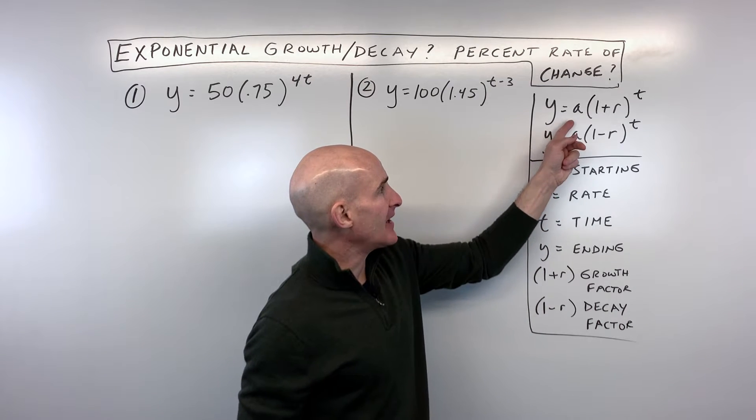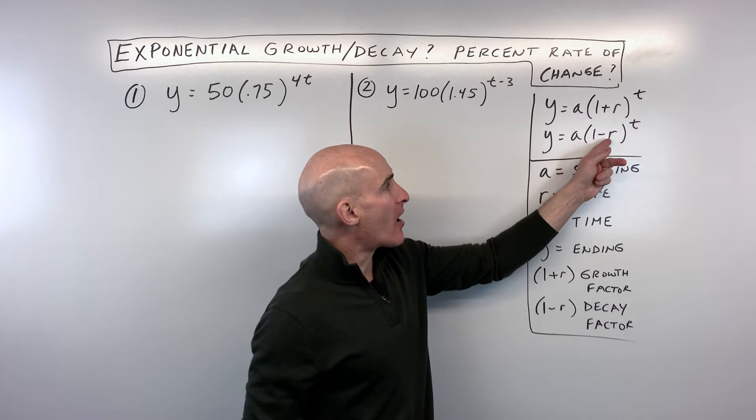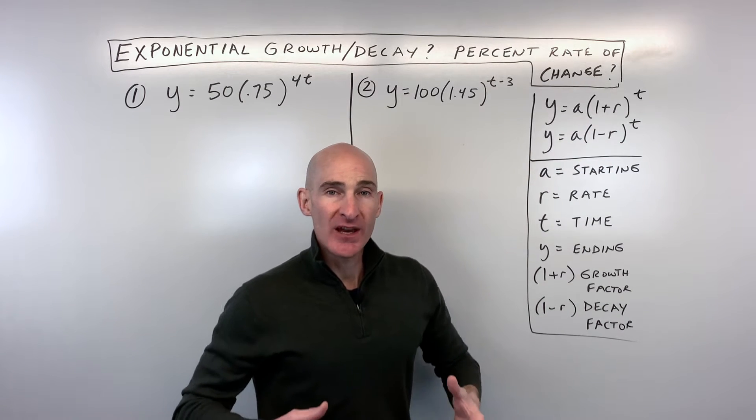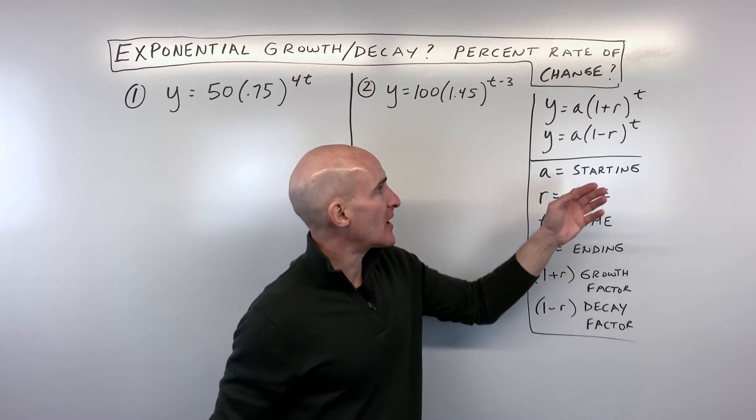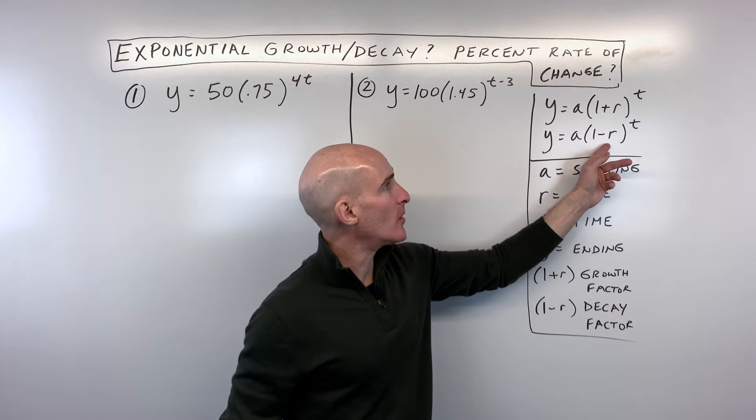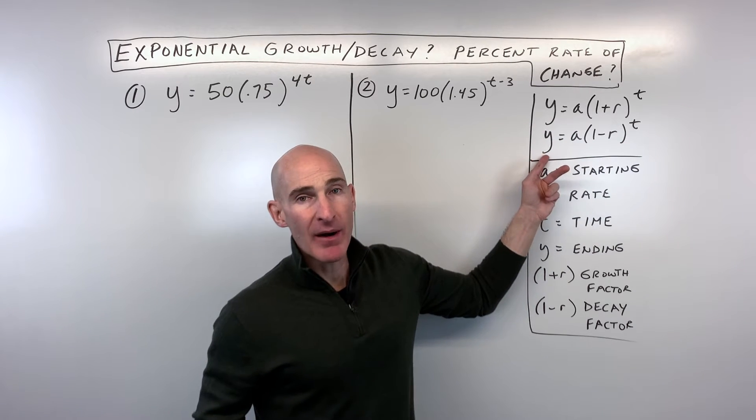And just remember that a here represents the initial amount or the starting amount, whereas the r represents the percent rate of increase or percent rate of decrease as a decimal, so you're going to have to convert that percent to a decimal. t is the time, and then y is going to be the ending amount.